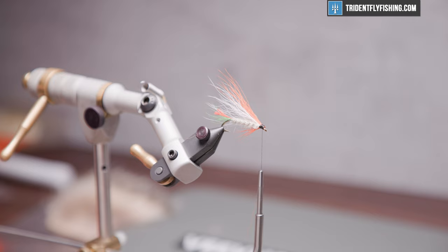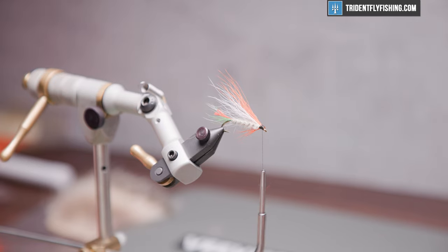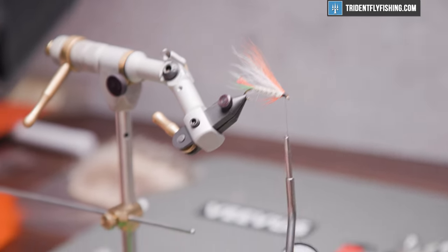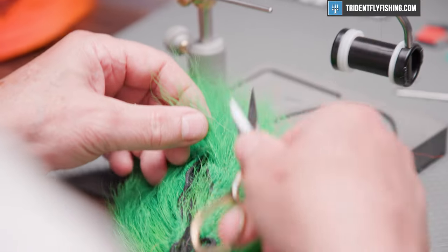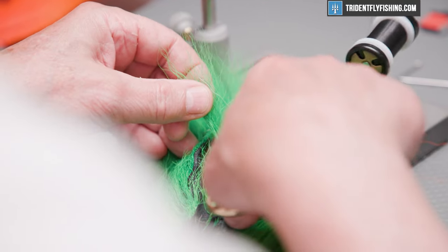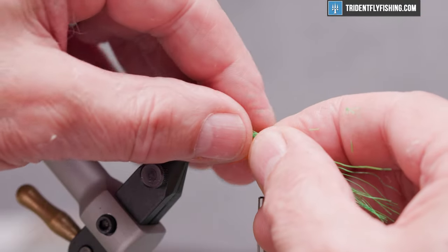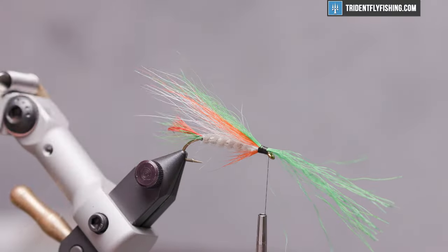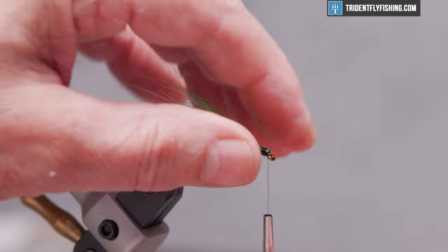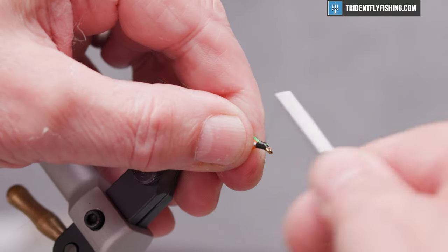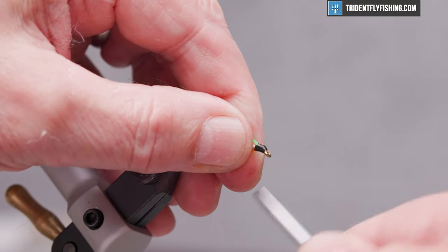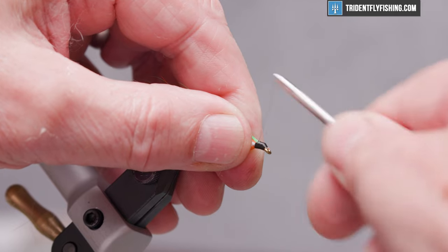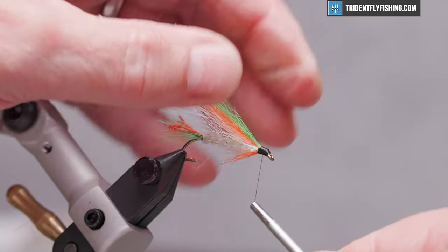And the next will be green. Same thing, pretty sparse, 15 pieces or so. Lay those right on top like that. Make some thread wraps to keep that head neat, but don't take too many. Again, you can really pile the thread up here easy if you're not careful.